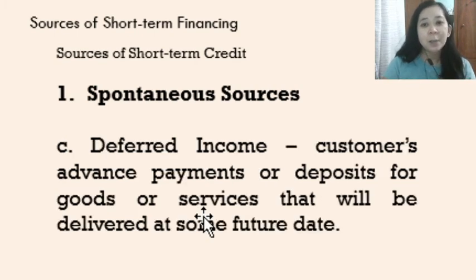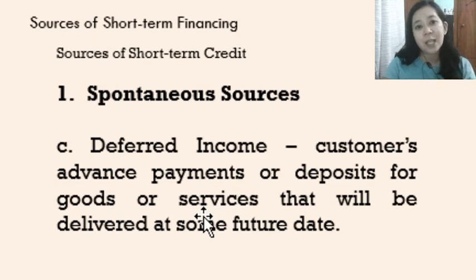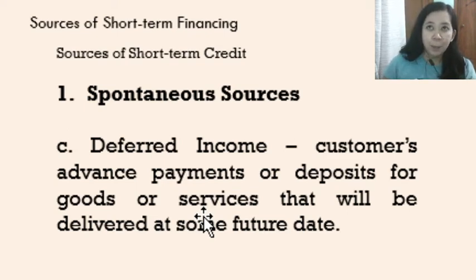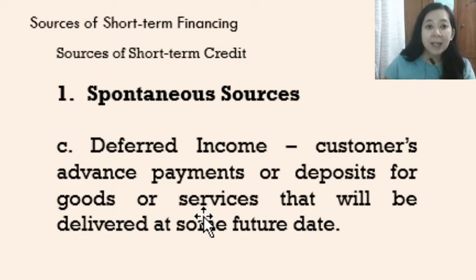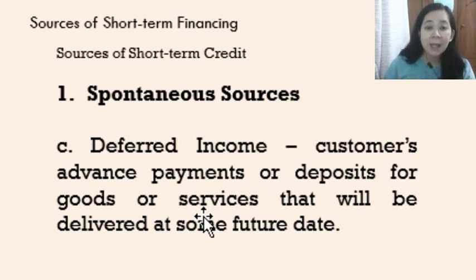The third spontaneous source is deferred income — customers' advance payments or deposits for goods and services that will be delivered at some future date. We receive payment from our customers in advance but have not yet delivered the goods or rendered the services. We will provide them at a later date. Since they have already paid in advance, we can already use that amount of cash.